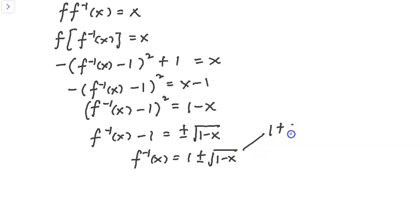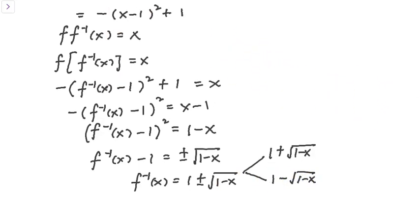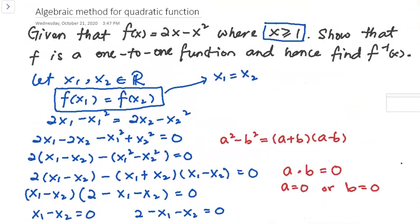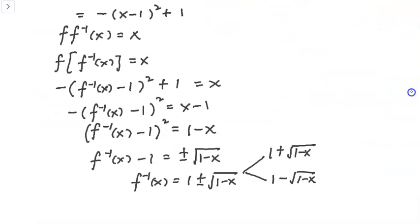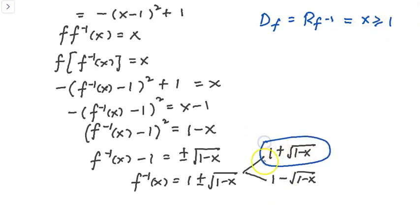We have two answers: 1 plus square root of (1 minus x), or 1 minus square root of (1 minus x). To decide which one to choose, we refer back to the domain given, which is x ≥ 1. Since the domain of f equals the range of f⁻¹, which should be [1, infinity), we check which answer produces values ≥ 1. Since square root always produces a positive number, 1 plus a positive number is always ≥ 1, so we choose the first one. 1 minus square root always gives a value less than 1, so we would only choose it if the domain were x ≤ 1.